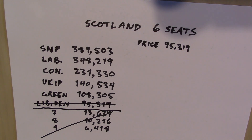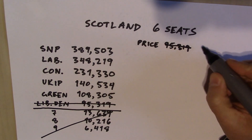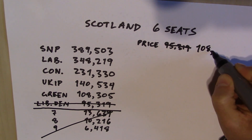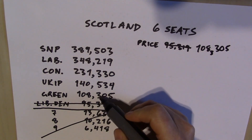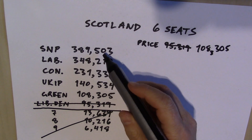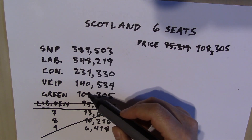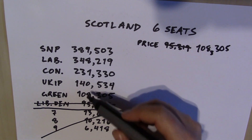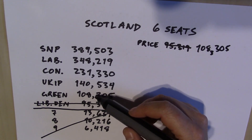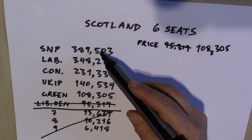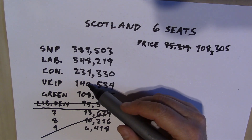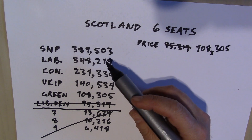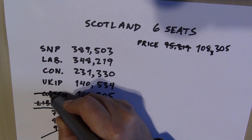What about the Greens? The Greens have 108,305 votes. If we set that as the price of a seat, that's not much different from before. Conservative, Labour, and the Scottish National Party all have more than double the Greens, so if we let the Greens have a seat, then awarding seats in proportion, Conservative, Labour, and SNP have to get two seats each at least, and UKIP gets a seat. That's eight seats, but there are only six available — so sorry Green Party, you cannot have a seat.